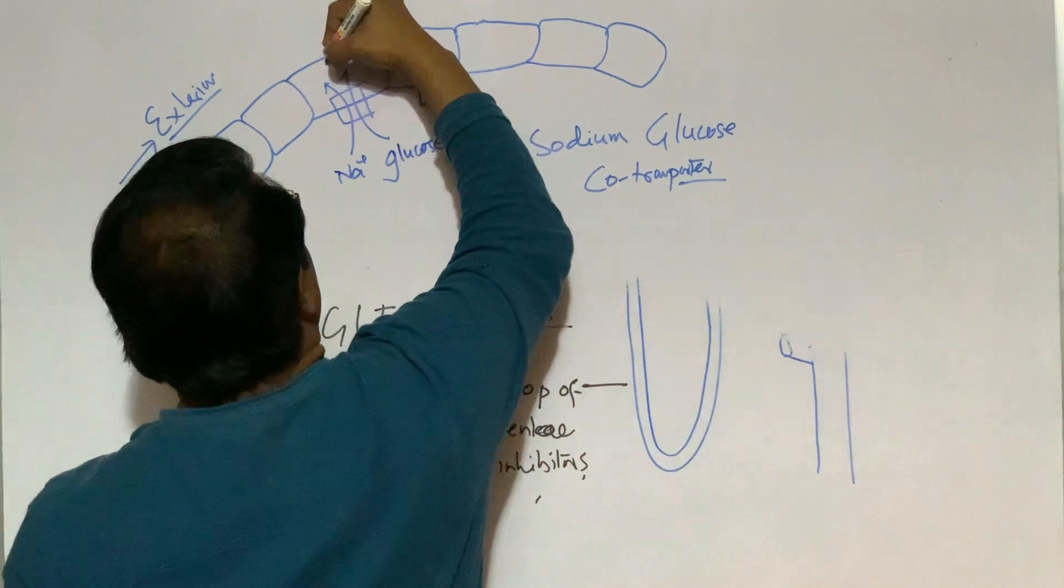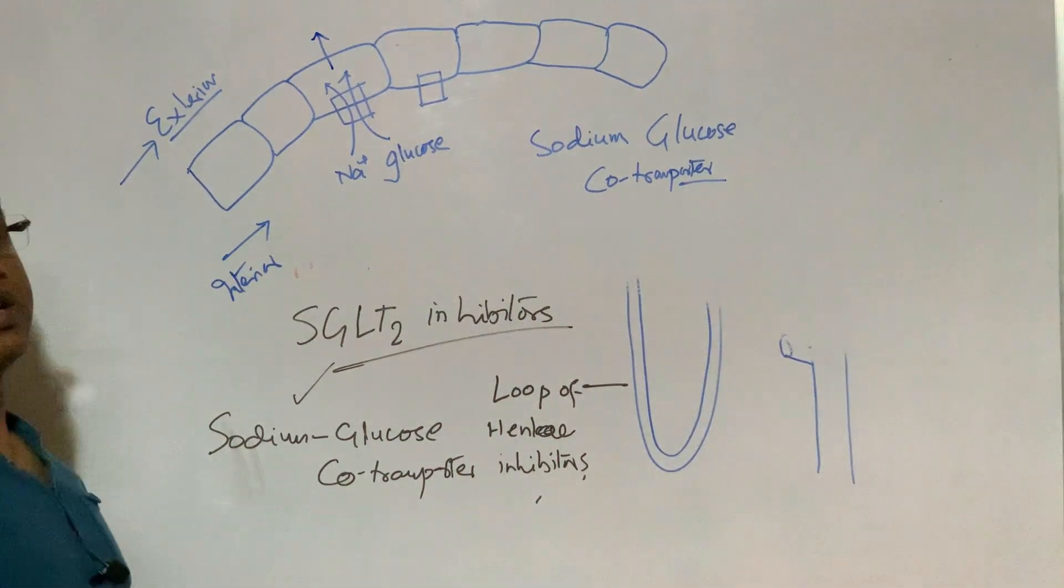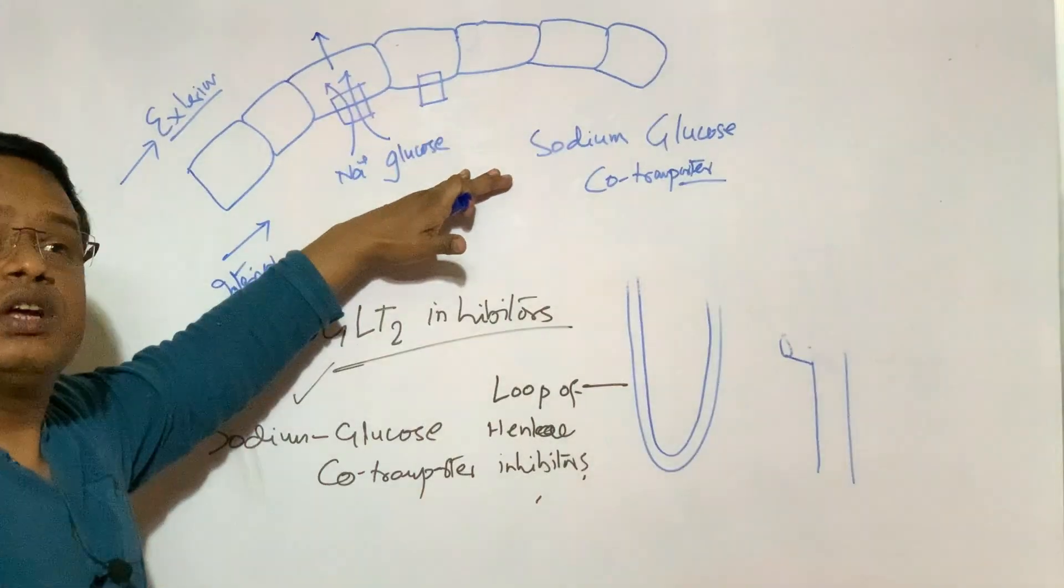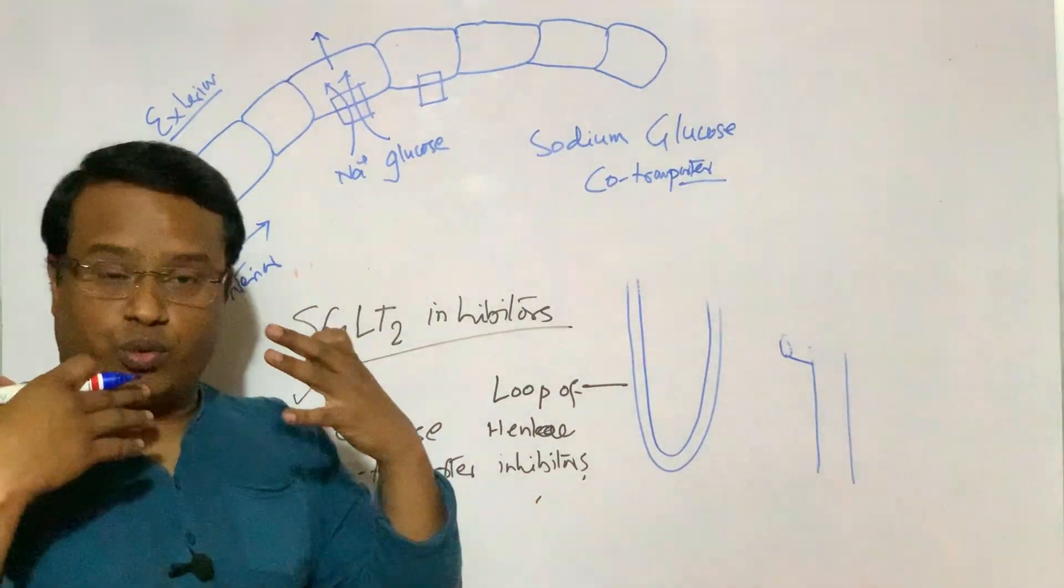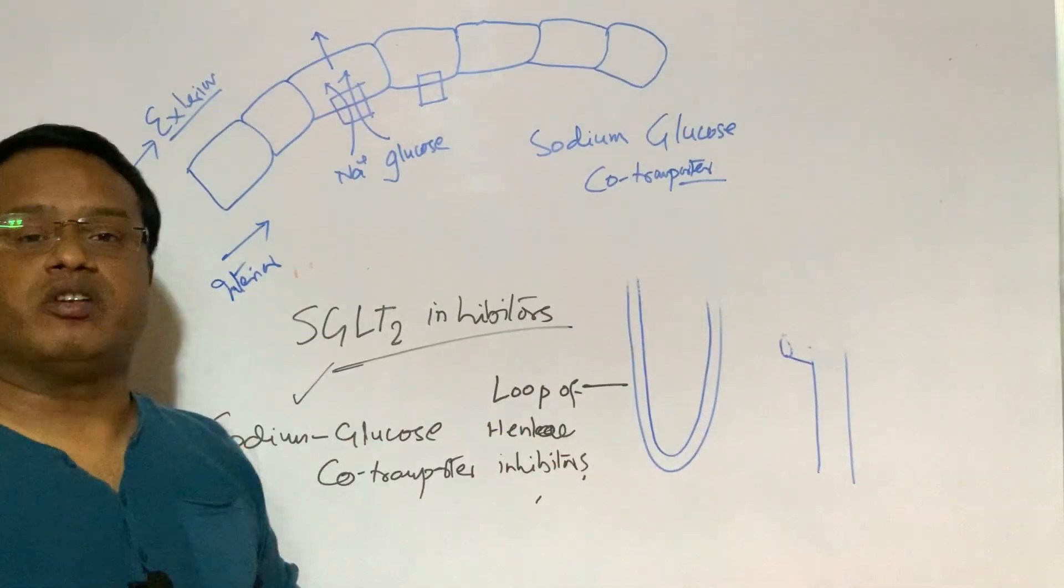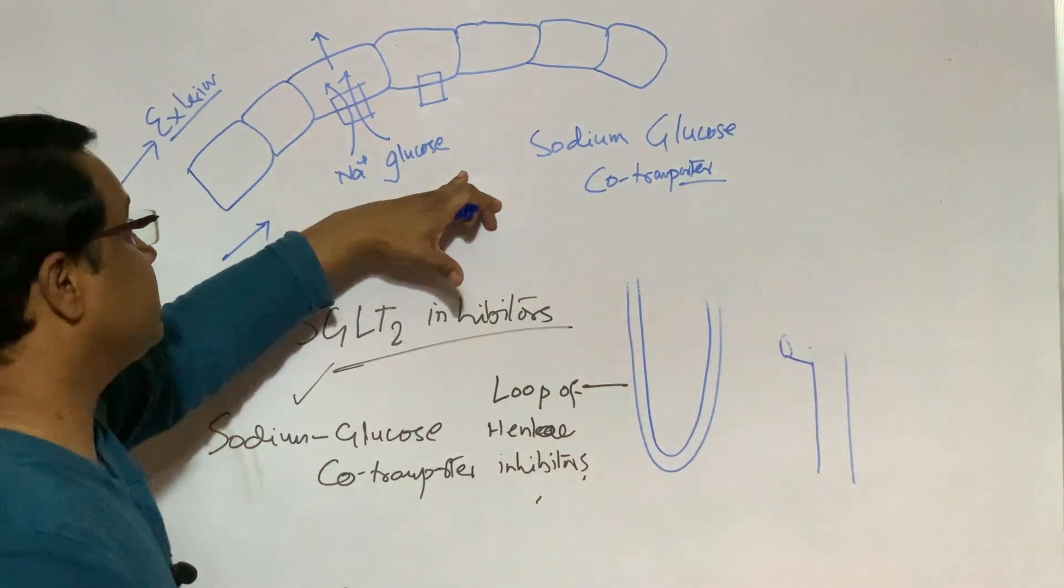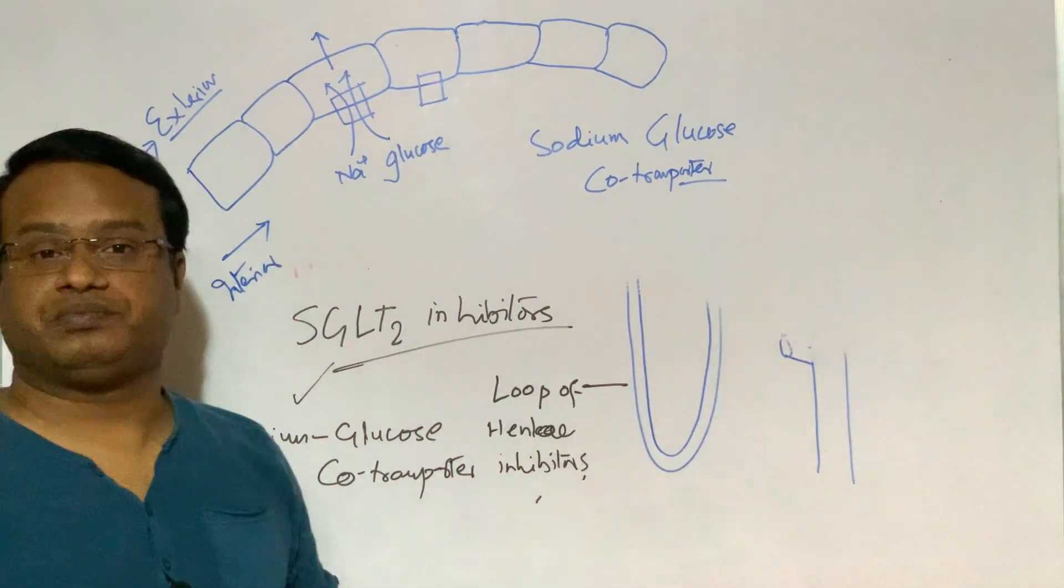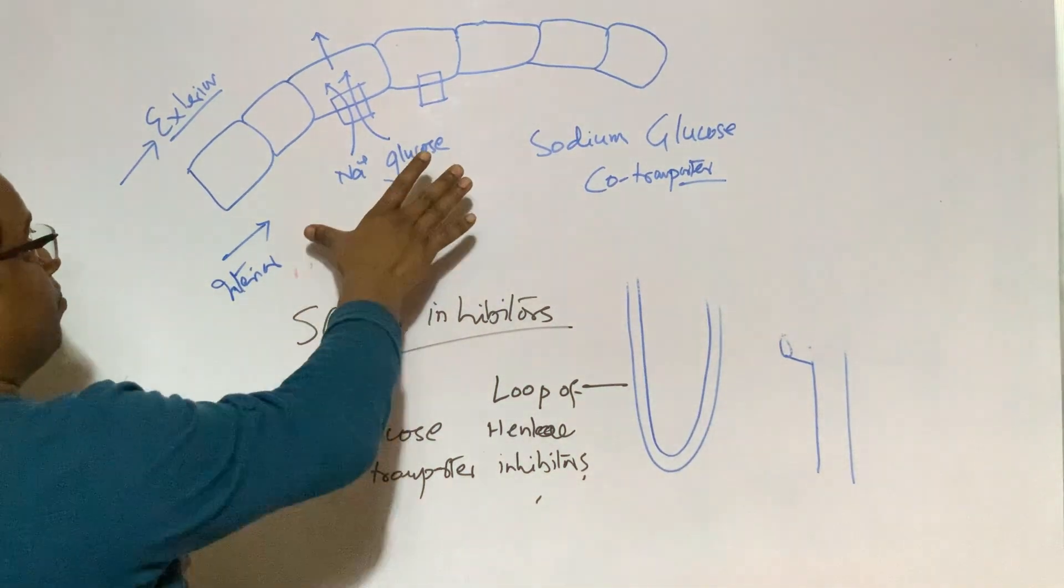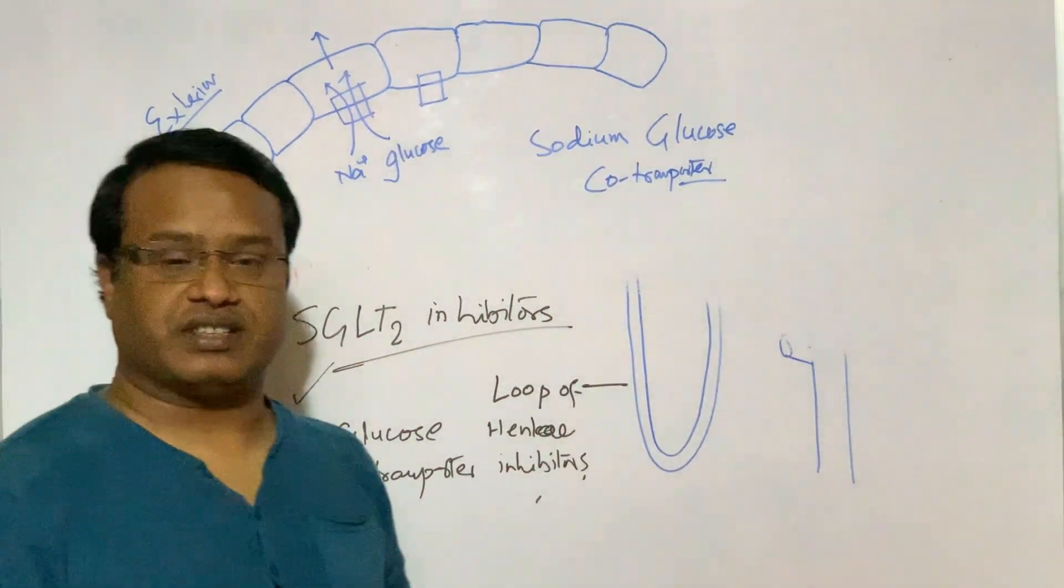That means sodium and glucose is transported simultaneously. And by diffusion from this wall, it is absorbed in the systemic circulation. In the normal situation, where from glomerular filtration, total amount of glucose is filtered. Then in the proximal convoluted tube, loop of Henle and distal convoluted tube, glucose is reabsorbed by this transporter.